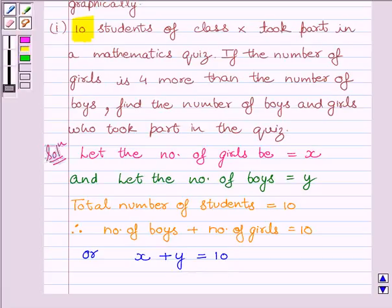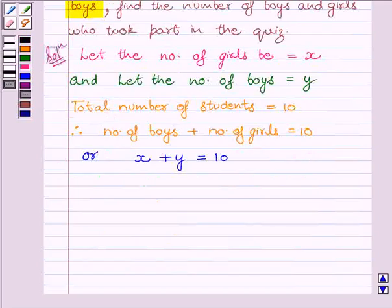We are given in the question that the number of girls is 4 more than the number of boys. This implies the difference between their number is equal to 4. So we can write x - y = 4. The number of girls minus the number of boys must be equal to 4. Hence, our two equations are x + y = 10 and x - y = 4.